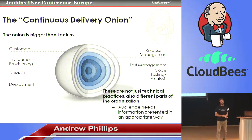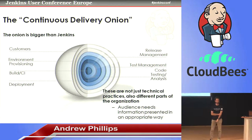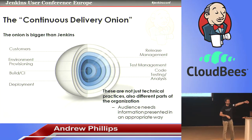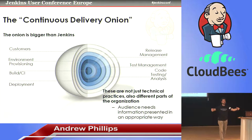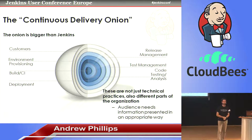What I'd really like to talk about is this onion — the overall set of challenges that are both technical and organizational that you start to address when you look at continuous delivery as an end-to-end problem. Continuous delivery, per the Wikipedia definition, is a set of processes and practices to speed up delivery of valuable software straight to your customer. Who here does agile development?